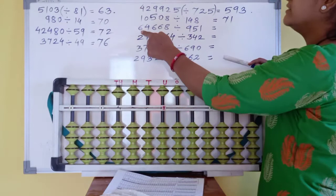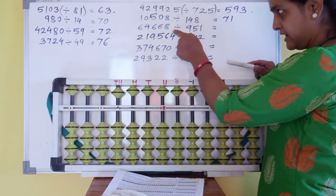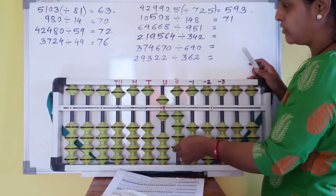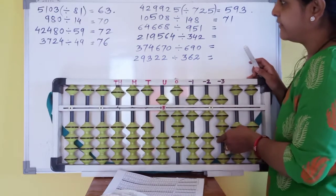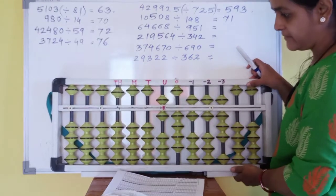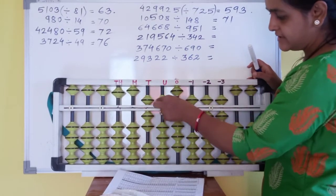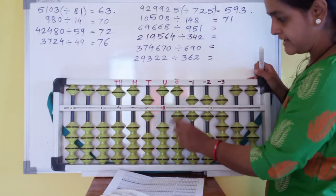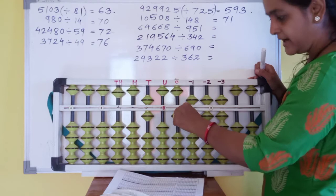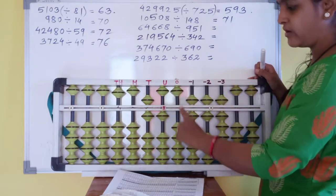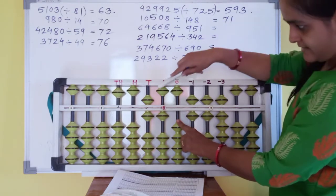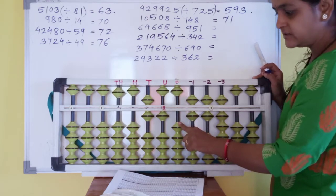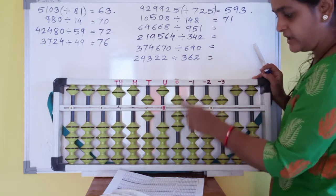Next number is 64688 divided by 951. 5 minus 4 is 1. So 64688 divided by 951. Now 9, 7 comes — 63. 5, 7 is not possible. Then less one, add 9. Minus 1. Close 10 and put finger on this rod. Now we do 5, 6 — not 30. From this rod, minus 3, minus 10 plus 7. Three, zero.